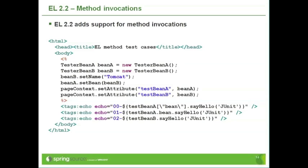In the first example, we get the bean property of bean A, which is an instance of bean B, and then we call the sayHello method on that instance of bean B. In the second example, we call the method directly on bean B rather than going via bean A, just to show the different ways available to call methods via expression language.